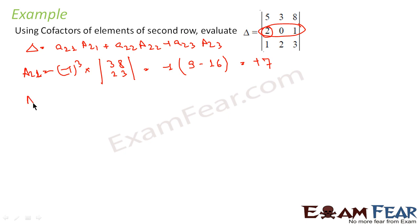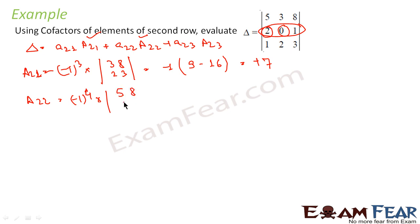Similarly A22: it is (-1)^(2+2) into M22. Ignore the second row and second column; you are left with 5, 8, 1, and 3. This becomes 1 into (5 into 3 = 15) minus 8, and that is 7.